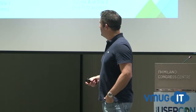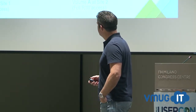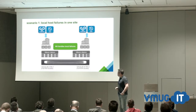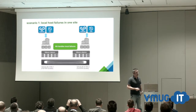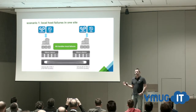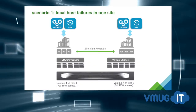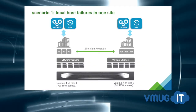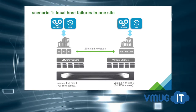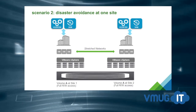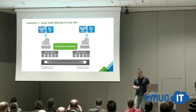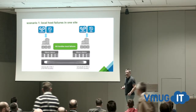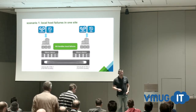If a host goes down, HA deals with it — the stretch cluster and SRM don't need to get involved. That's just a local HA failure with no difference irrespective of the architecture. For disaster avoidance — for example, a non-disruptive array firmware upgrade that you're nervous about based on past experience — you can use the recovery plan in SRM to shift workloads over to the other site.